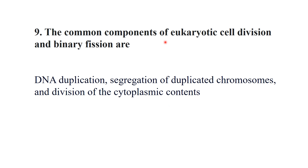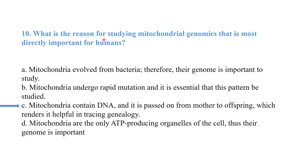The common components of eukaryotic cell division and binary fission are DNA duplication, segregation of duplicated chromosomes, and division of cytoplasmic contents. What is the reason for studying mitochondrial genomics that is most directly important for humans?